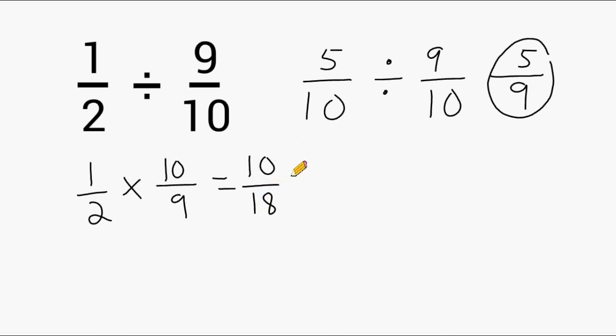And because these are both even numbers, they can be simplified by a factor of 2. So if we divide the 10 by 2, we get 5. And if we divide the 18 by 2, we get 9. So that does in fact confirm that 1 half divided by 9 tenths is 5 ninths.